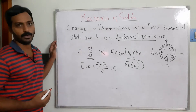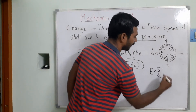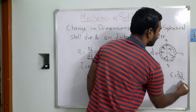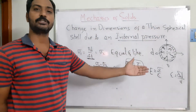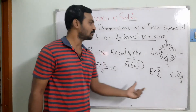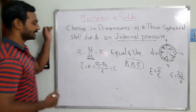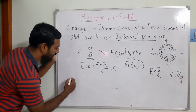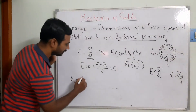Now we need to find the change in dimensions of the component. Young's modulus E equals stress divided by strain, and strain equals delta-D/D or delta-L/L. In this case we are considering the change in diameter. Assuming stresses act in the x-direction, we want to find the strain in the circumferential or longitudinal direction.